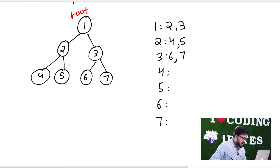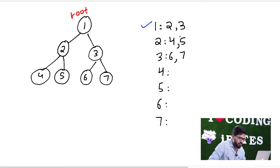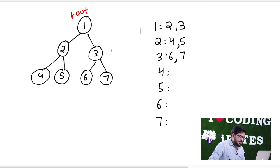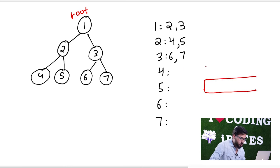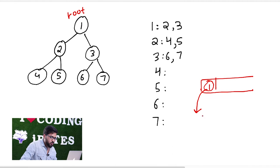For level-wise print, I want the output in a specific format. As I've already said, why do we use a queue? Basically, if we have the root, we put root into the queue. Then we pop root out and print it along with its children. Those children are then pushed further into the queue, and this continues level by level.